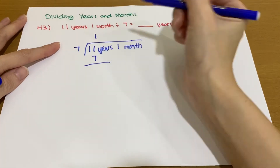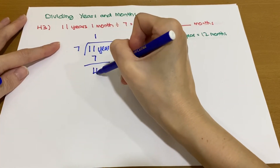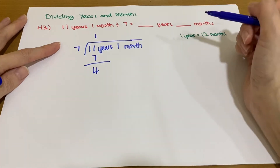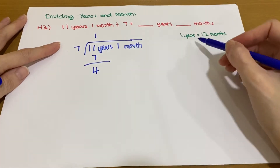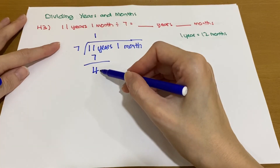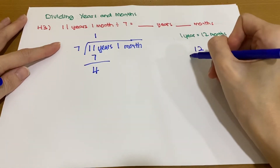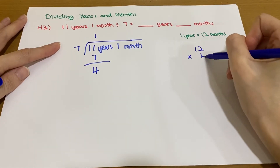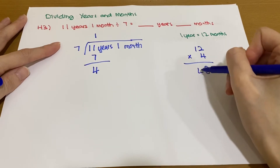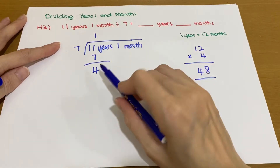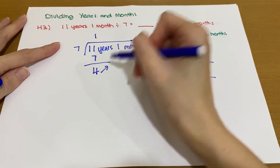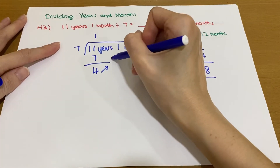The balance is 4, since 11 minus 7 equals 4. We know that 1 year equals 12 months, so for 4 years: 12 times 4 equals 48. These 4 years convert to 48 months.